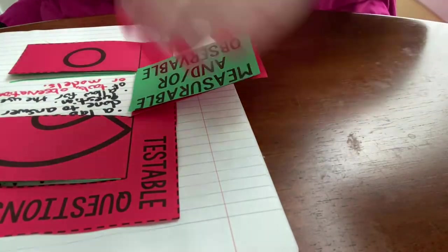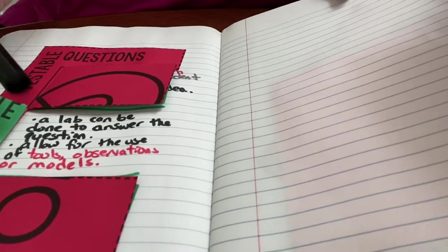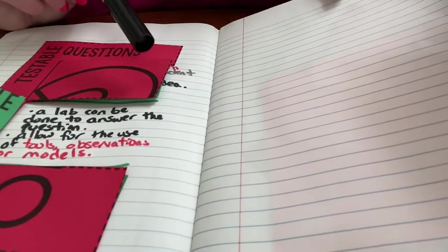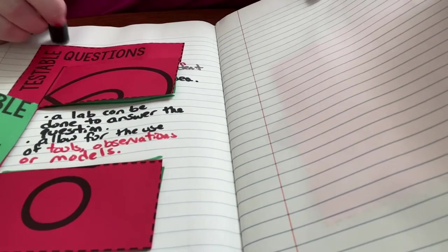So in order for it to be measurable or observable, we need to make sure that a lab, an activity, an experiment can be done, and that we can use tools, observations, and/or models to answer and see those questions being answered.